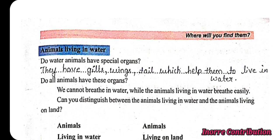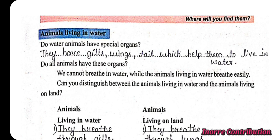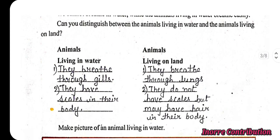Animals living in water — do water animals have special organs? They have gills, fins, and a tail which help them to live in water. We cannot breathe in water, while the animals living in water breathe easily. Can you distinguish between the animals living in water and the animals living on land?